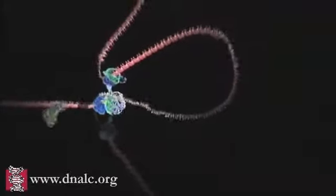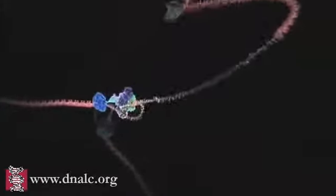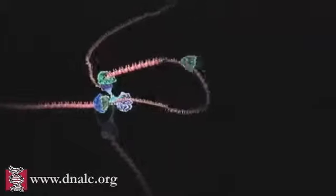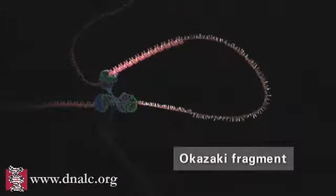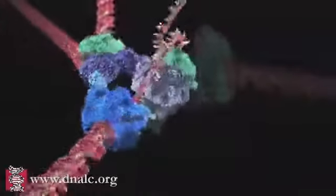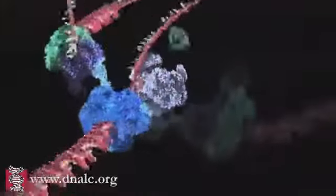As it emerges from the helicase, the lagging strand is organized into sections called Okazaki fragments. These are then presented to a second DNA polymerase enzyme in the preferred 5' to 3' orientation.